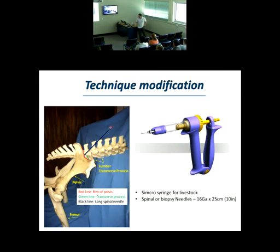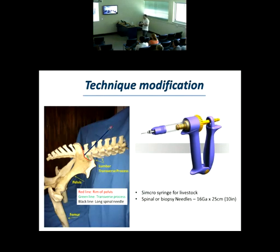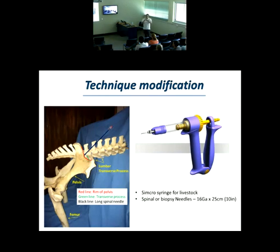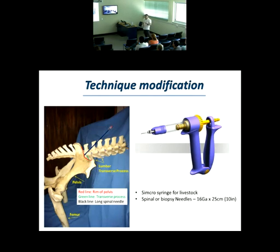What we want to do is modify this technique. This is a plastic syringe used for livestock vaccines. We are going to use spine or biopsy needles — 25 centimeters long. The starfish spines are only 5 to 6 centimeters in adults. So for a 35 to 40 centimeter starfish, the diver will be safe and not get stung by the animal.